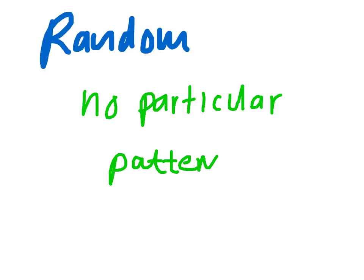Now the word random, in probability terms, in what we're doing today, is no particular pattern. So we could get one event, no connection between one event and the next. Things happening in a random sort of order. So no particular pattern involved.